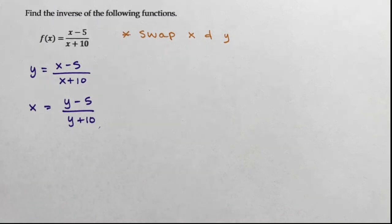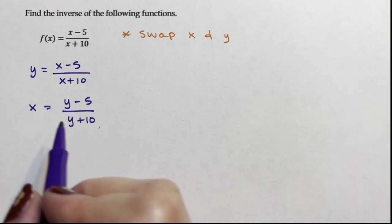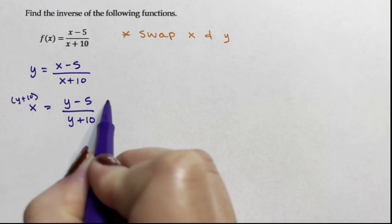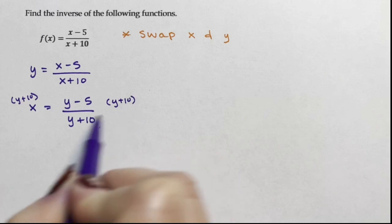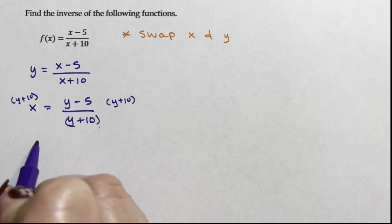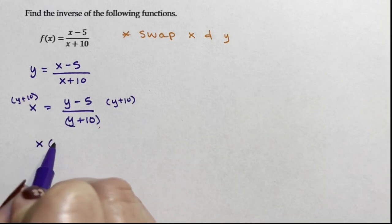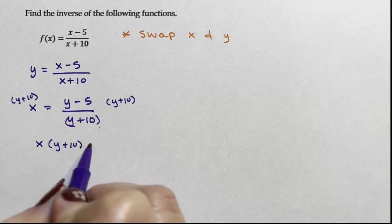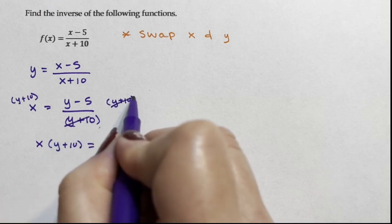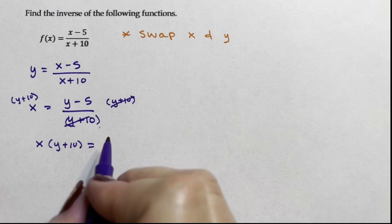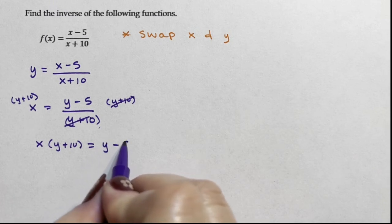And the only way to do that is to multiply both sides by y plus 10. So I'm going to say y plus 10 and y plus 10. On the left hand side, I'm going to get x times y plus 10 equals, those will multiply, divide, reduce to 1, equals y minus 5.